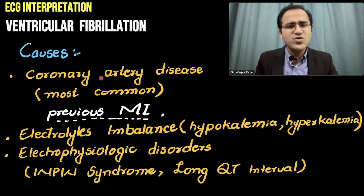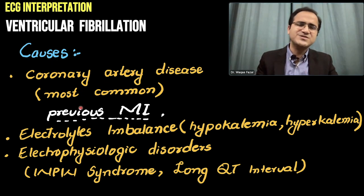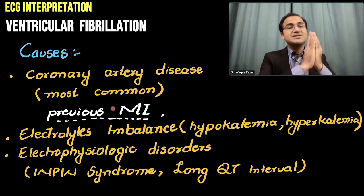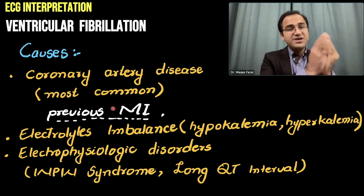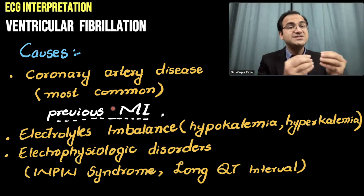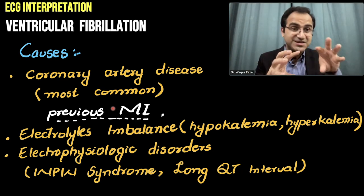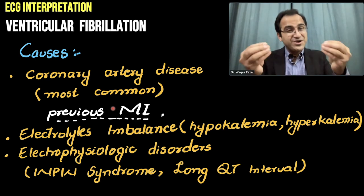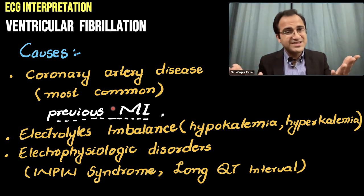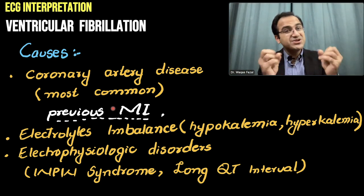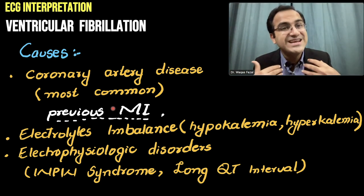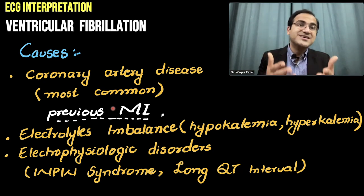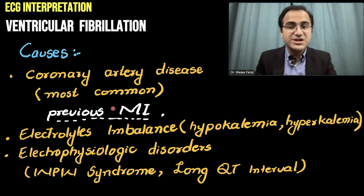The causes of ventricular fibrillation: coronary artery disease is the most common cause. Previous MI — myocardial infarction tissue — is significant because damaged heart tissue has the ability to generate abnormal rhythms. These are the centers of ectopic foci. Even within the first 24 hours after MI, ventricular fibrillation is the most common cause of death. We give beta blockers after an MI to prevent these type of ventricular fibrillations.